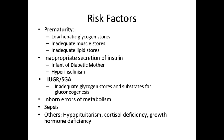Prematurity is a large risk factor for hypoglycemia. Low hepatic glycogen stores, inadequate muscle stores, and inadequate lipid stores are all reasons why hypoglycemia frequently occurs in premature infants. Infants of diabetic mothers who have hyperinsulinism have inappropriate secretion of insulin, which puts them at risk as well. Small for gestational age infants have inadequate glycogen stores and substrates for gluconeogenesis, similar to premature infants.